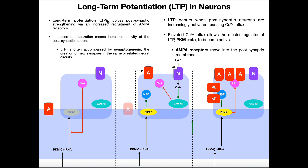Long-term potentiation, or LTP, involves postsynaptic strengthening via increased recruitment of AMPA receptors — this is all at the molecular level. When we say strengthening, one way to strengthen a synapse is to put more receptors in the membrane. If there are more receptors in the membrane, the membrane is going to be more responsive to the same level of neurotransmitter, versus fewer receptors meaning less responsiveness. So we can strengthen the synapse by adding more receptors into the membrane, and that's what long-term potentiation involves.